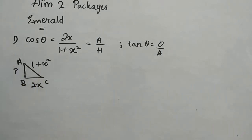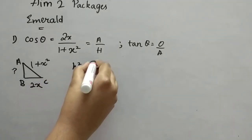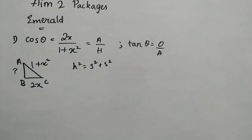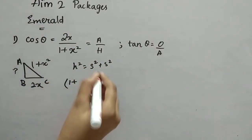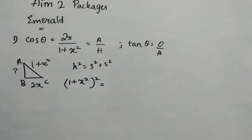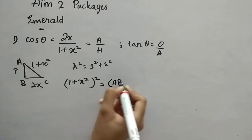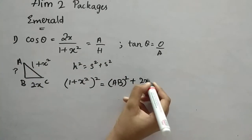Now we have to find the opposite side AB. Using the Pythagorean theorem: hypotenuse² = side² + side², so (1 + x²)² = AB² + (2x)². The left side expands as 1 + 2x² + x⁴, and (2x)² is 4x².